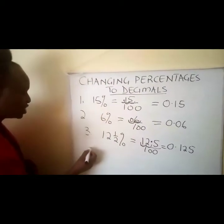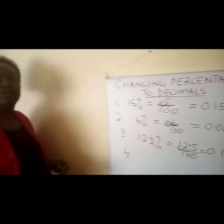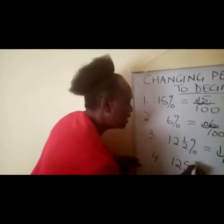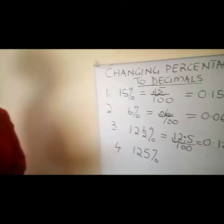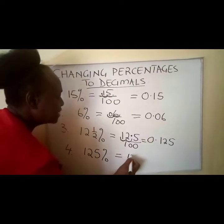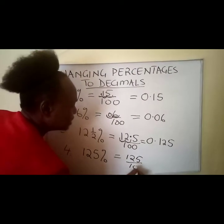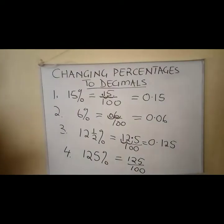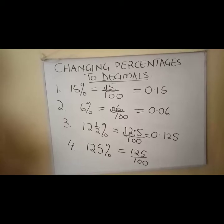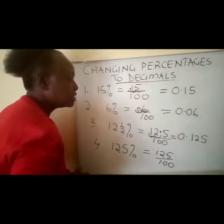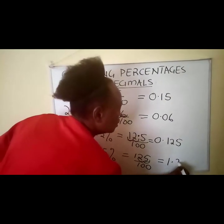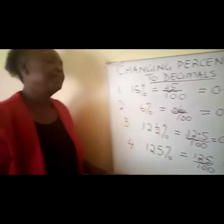My last illustration is that sometimes you are given a percentage like 125 percent. Yes, we can have percentages that exceed 100 percent. It will work the same way — it's going to be 125 over 100, which is an improper fraction. Because if it exceeds 100 it means it's more than one whole number. So when we divide, it's going to be 1.25. Thank you.